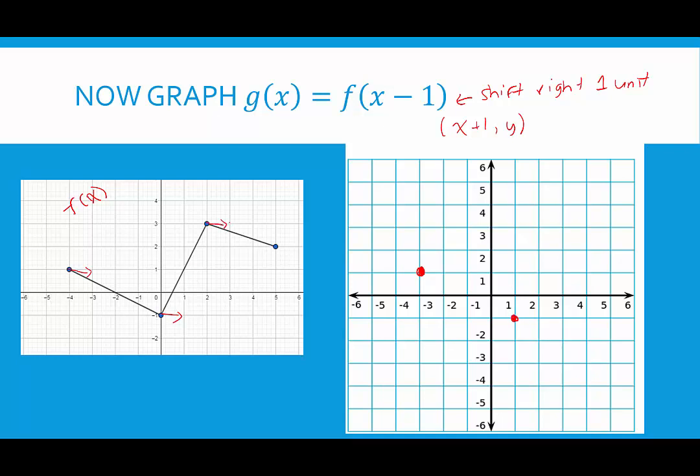2, 3 would move 1 unit to the right, so it would be at 3, 3. And 5, 2 would move over 1 unit to the right, so it would be at 6, 2.